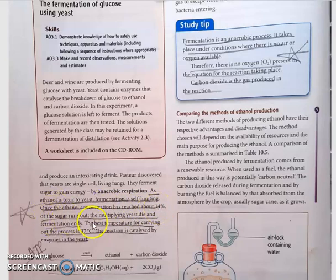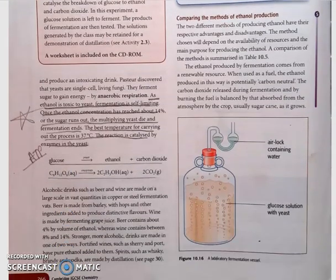Ethanol is toxic to yeast. The fermentation is limiting, and once the ethanol concentration has reached about 14 percent or the sugar runs out, the multiplying yeast die and fermentation ends. The best temperature is 37 degrees Celsius, and the reaction is catalyzed by enzymes in the yeast. So glucose, C6H12O6, with yeast enzymes as catalyst in water, produces ethanol and carbon dioxide. You have to study this chemical equation in balanced form.